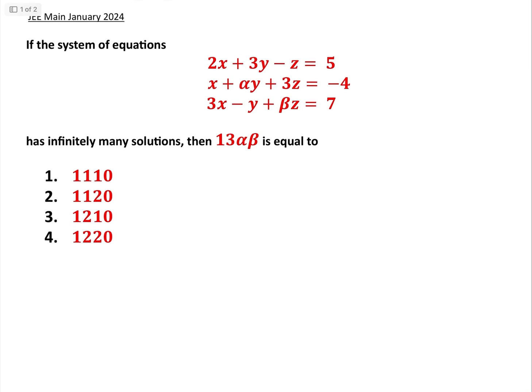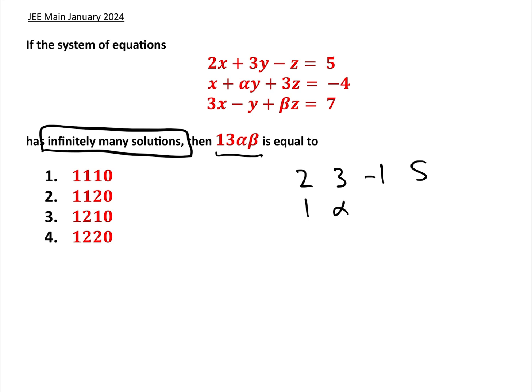Here's question number one from the JEE Main January 2024. We have a system of equations with infinitely many solutions, and we're asked to find 13αβ. So let's write down the augmented matrix: that's going to be 2, 3, −1, 5 / 1, α, 3, −4 / 3, −1, β, 7. We need to find α and β.